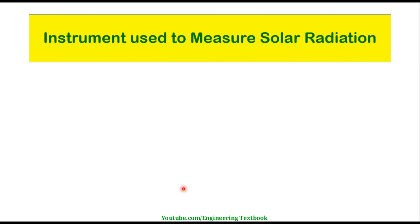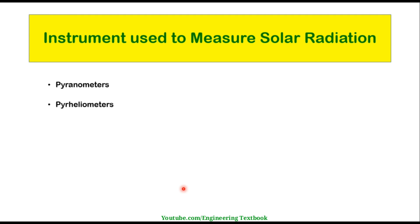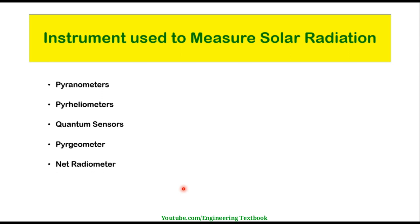There are various types of instruments used to measure solar radiation, serving two different functions. They are: pyranometer, pyrheliometer, quantum sensors, pyrgeometer, net radiometer, and sunshine recorder. These instruments will be seen in detail in the next video.